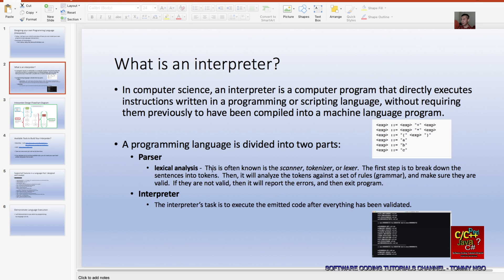A programming language is divided into two parts: the parser and the interpreter. In the parser, we have the lexical analysis, often known as the scanner, tokenizer, or lexer. The first step is to break down the sentences into tokens. Then it will analyze the tokens against a set of rules or grammar and make sure that they are valid. If they are not valid, then the parser should report the errors and exit the program gracefully.